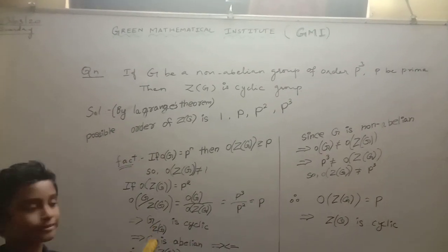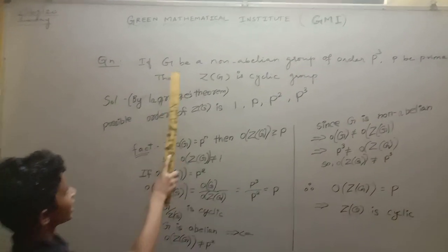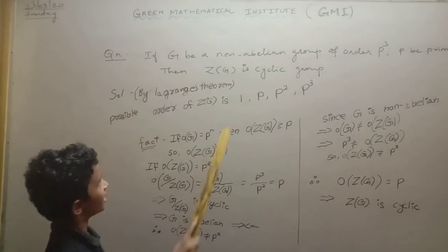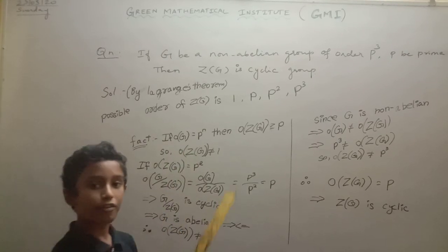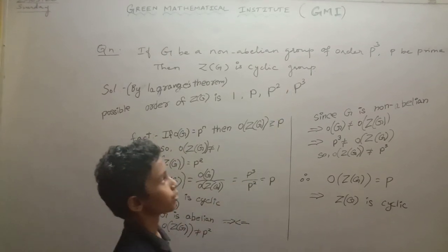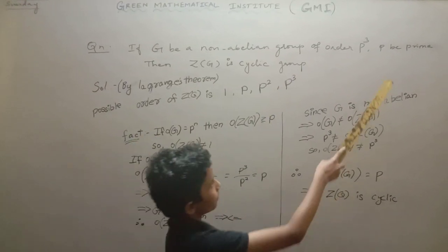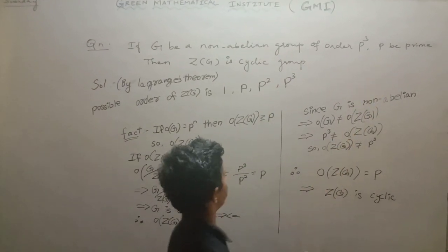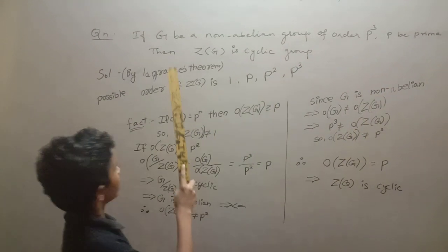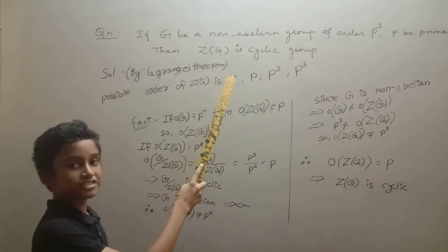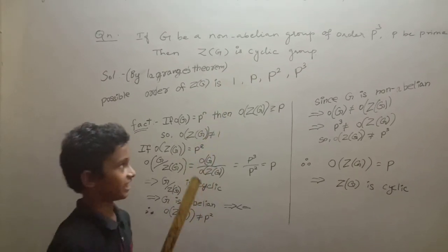The problem statement is: if G is a non-abelian group of order P cube, where P is a prime, then Z of G is cyclic.